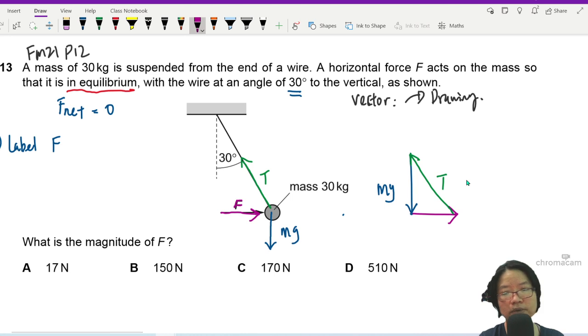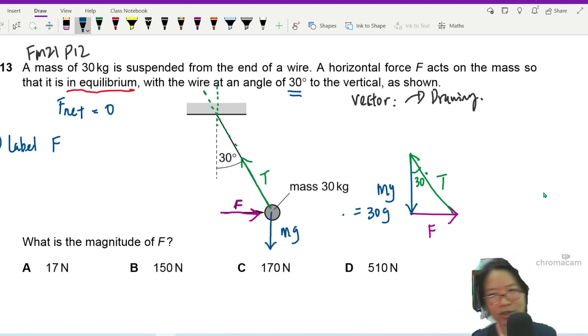And this will be the direction of T. Label, label. Miss, where is 30? Well, 30 is the angle between T and the vertical, which also happens to be parallel to mg. So this is your 30. 30 is the angle between T and the vertical. So this is T. This is vertical. This will be 30 degree. We can find F. Yes. Because we do know mg. mg is 30 times 9.81. I'll write here for you. mg is 30g.